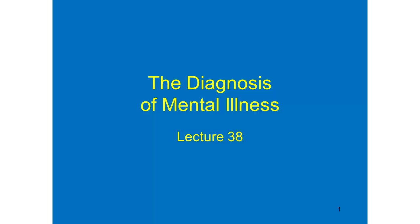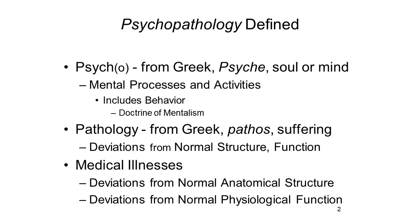Lecture 38: The Diagnosis of Mental Illness. So far, aside from a discussion of the effects of brain damage, we've focused this course on the mind and behavior characteristic of normal adults and children. Now it's time to examine mental illness in its own right, abnormal and maladaptive behavior, the disordered mental structures and processes that underlie it, and the interventions that treat and prevent mental illness.